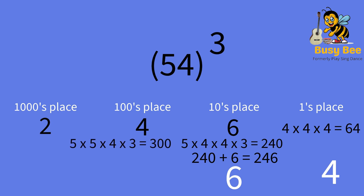Now, we multiply 5 times 5 times 4 times 3, which is 300. Now, we add 300 plus 4, which is 304. The 4 is our hundreds place answer and we put the 30 in the thousands place.